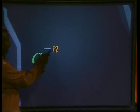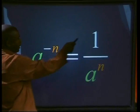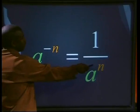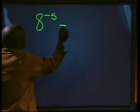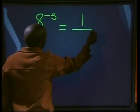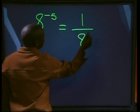It's time for a definition. Any number to a negative power will be the same as one divided by that number to a positive power. For example, eight to the power minus five will be the same as one divided by eight to the power of positive five.